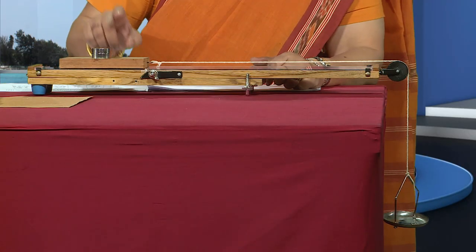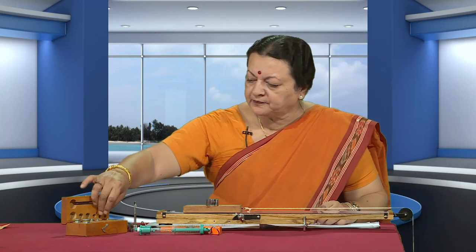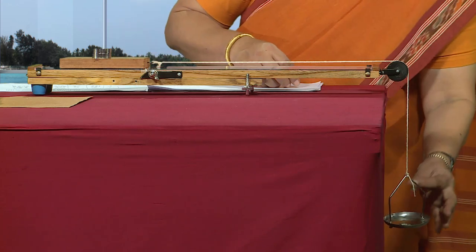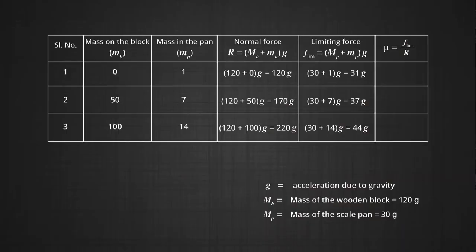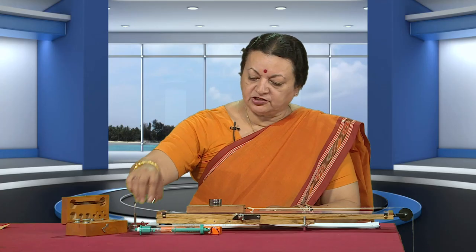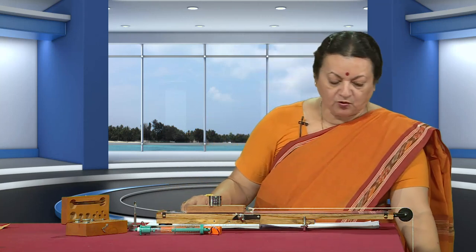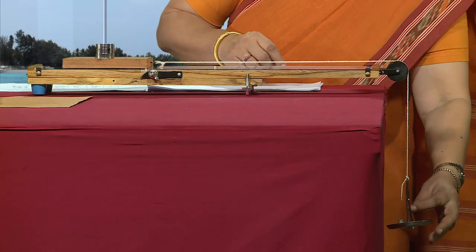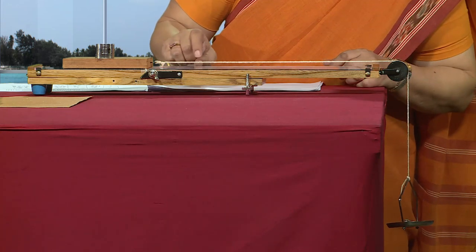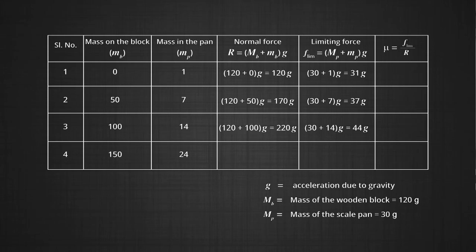For the third reading, another 50 grams is added on top of the block (total 100 g on block). After testing, 14 grams in the pan is just enough to move it. For the fourth reading, one more 50 grams is added (150 g on block), giving a normal force of 270 g. Increasing the pan weights and tapping shows that 24 grams in the pan is sufficient to move the block, giving a limiting friction value of 54.